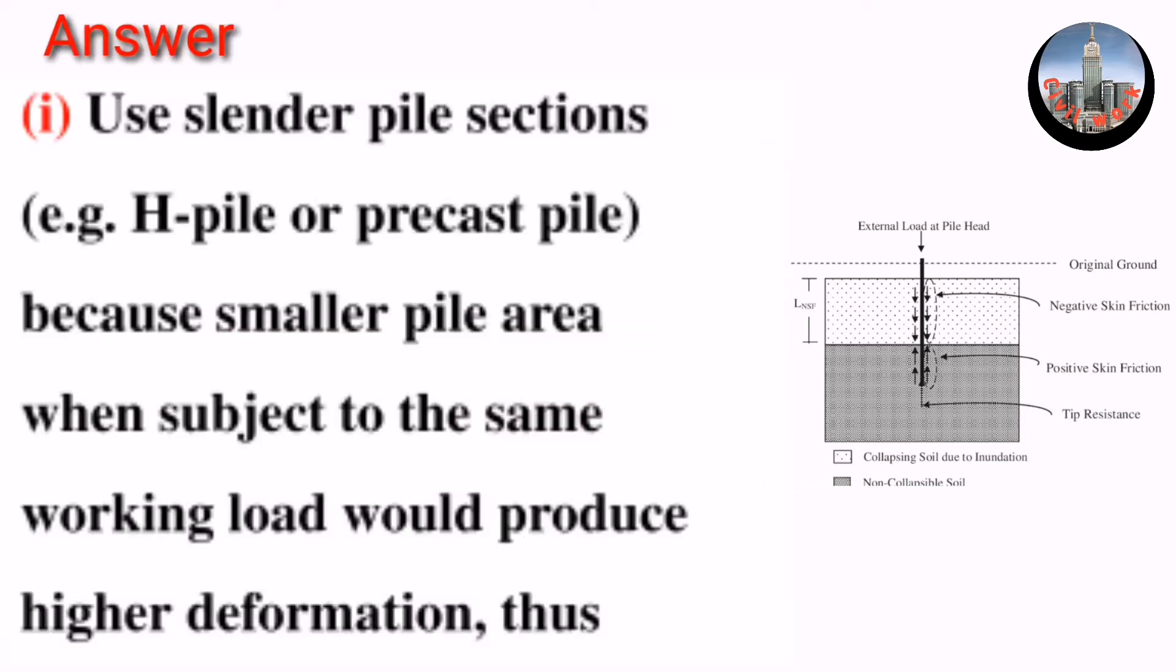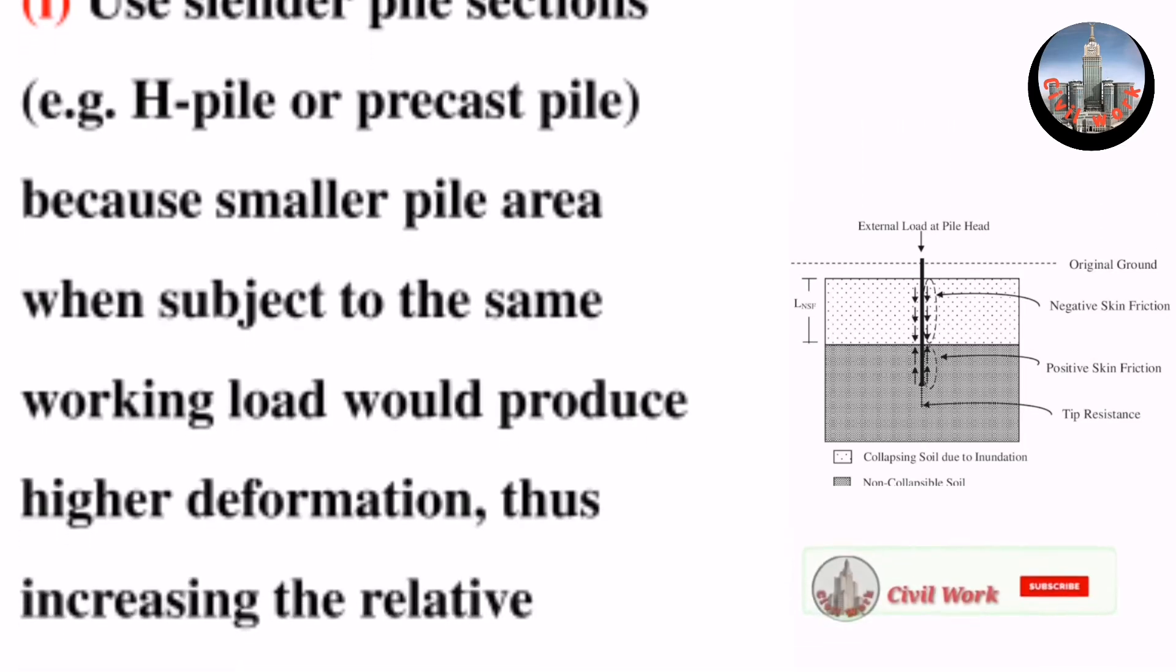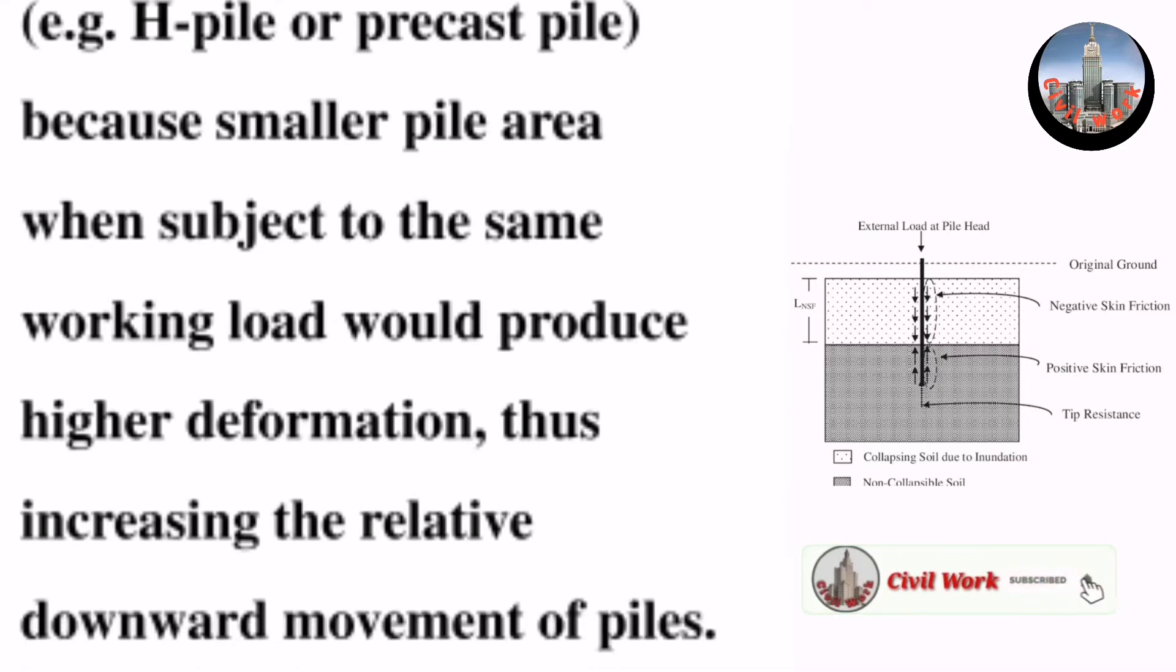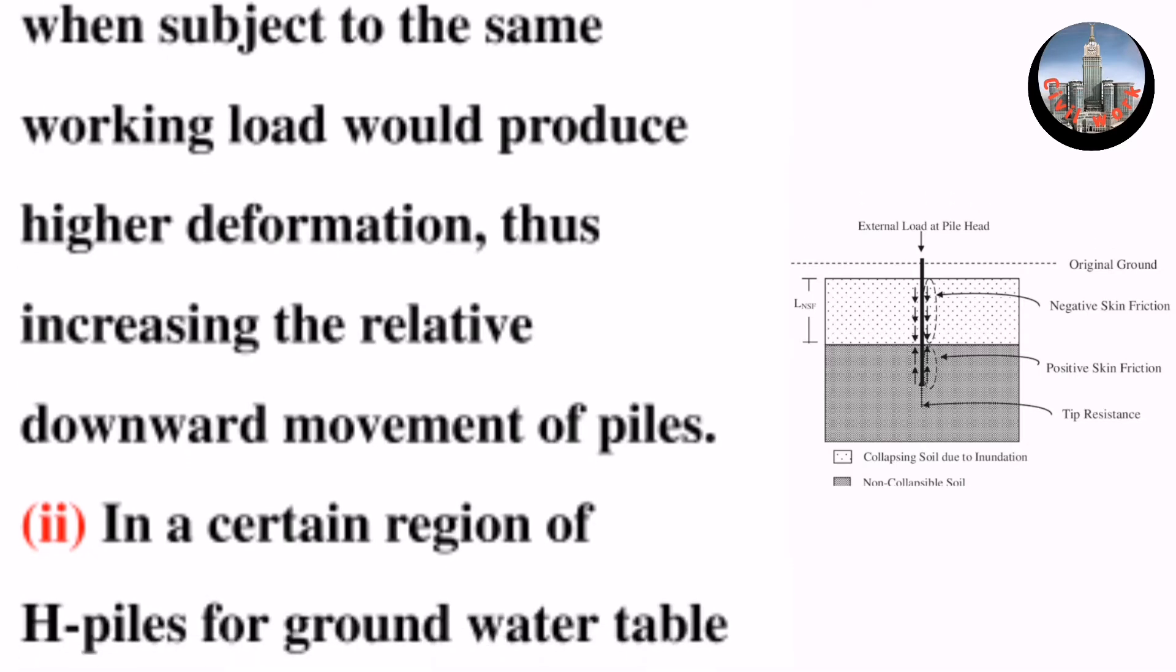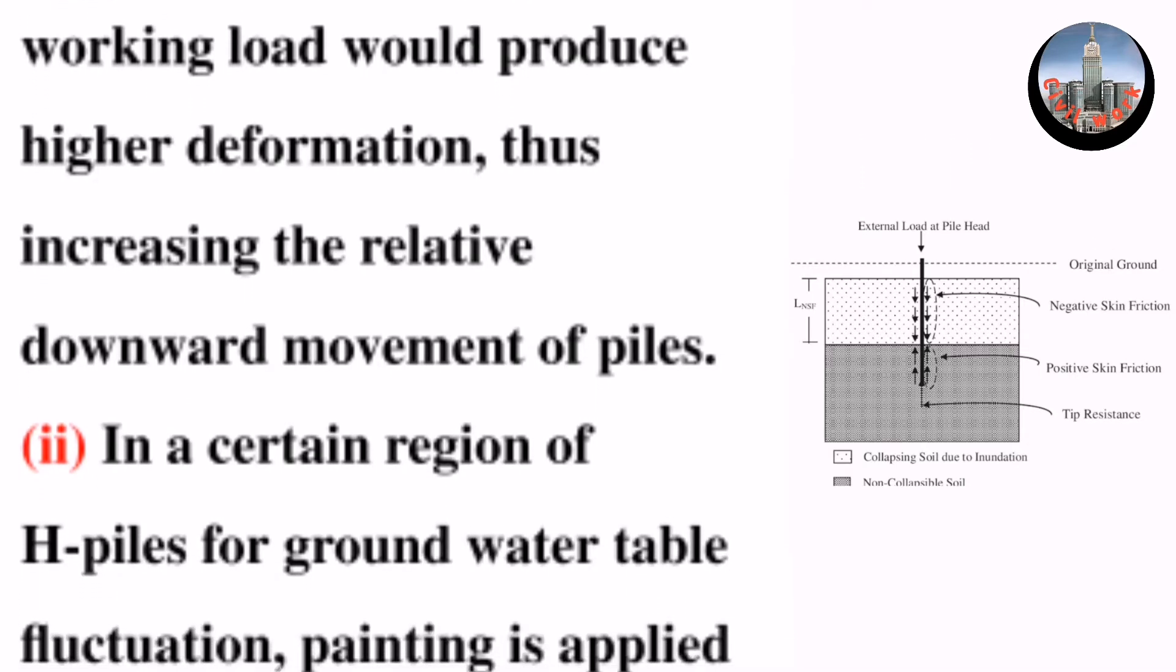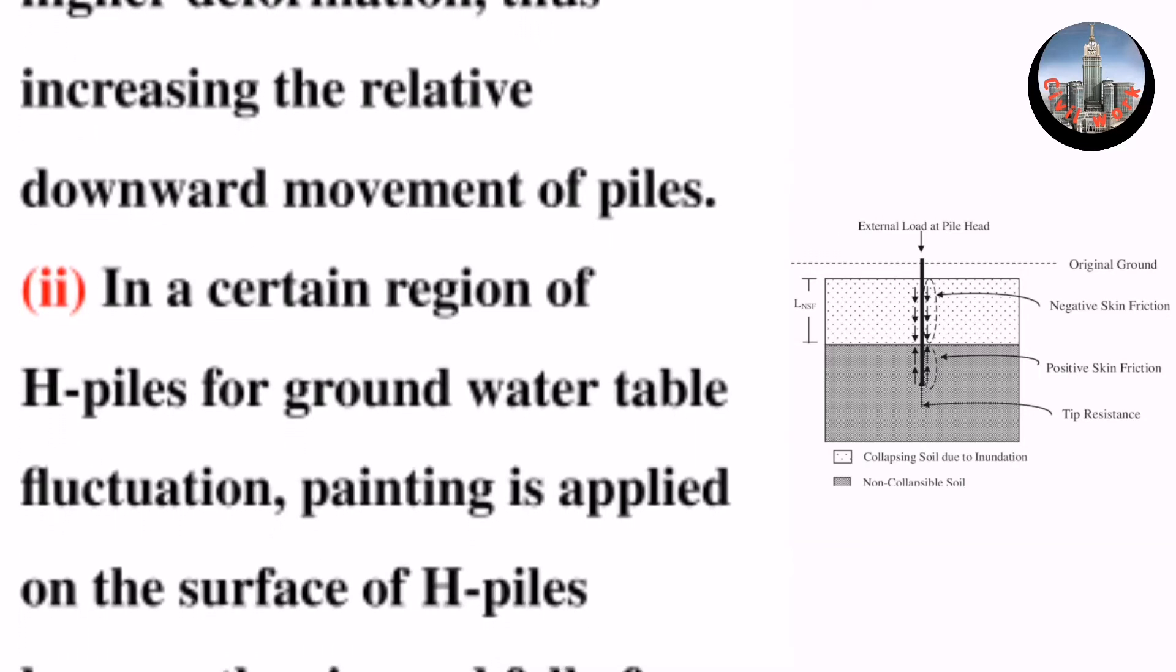Method one: Use slender pile sections, for example H-pile or precast pile, because smaller pile area when subject to the same working load would produce higher deformation, thus increasing the relative downward movement of piles.